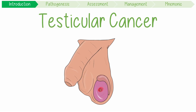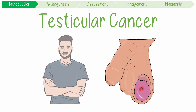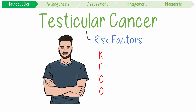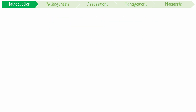Testicular cancer is the most common solid malignancy in young men. Key risk factors include KFCC: Klinefelter syndrome, a family history, cryptorchidism — which is another term for undescended testes or cryptically placed testes — and cannabis use.